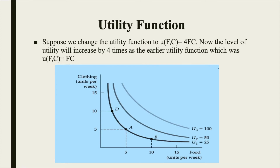Suppose we change the utility function to U(f,c) = 4fc. Now the level of utility will increase by 4 times compared to the earlier utility function U(f,c) = fc. So the utility of indifference curve U1 will be 4×25 = 100, the utility of U2 will be 4×50 = 200, and the utility of U3 will be 100×4 = 400.